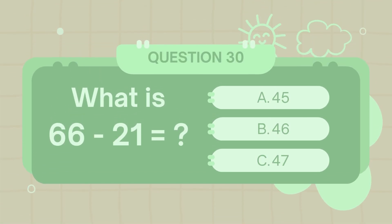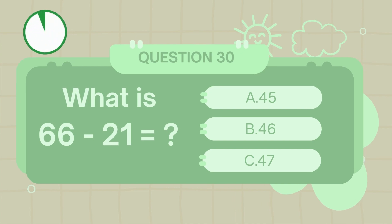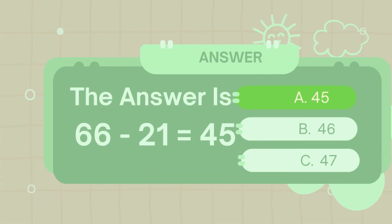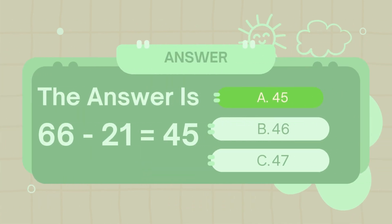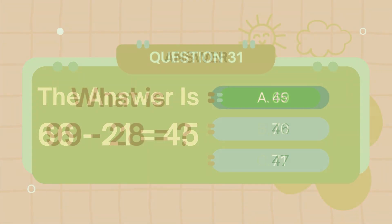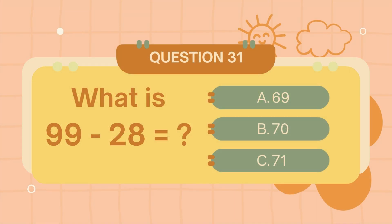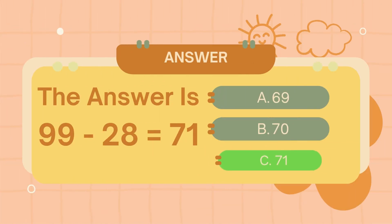What is sixty-six minus twenty-one? The answer is forty-five. What is ninety-nine minus twenty-eight? The answer is seventy-eight.